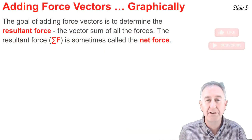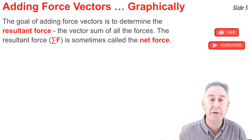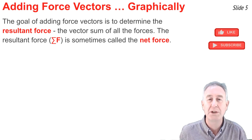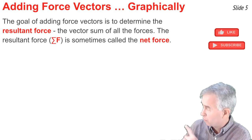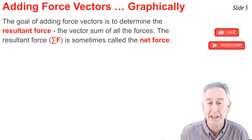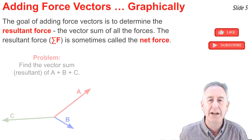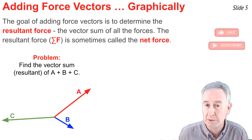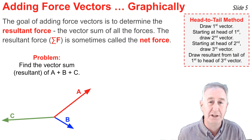Let's begin discussing the graphical method of adding force vectors together. The goal of adding force vectors is to determine the resultant force, that is, the vector sum of all the individual forces. We sometimes refer to this vector sum by a symbol called sigma f, shown here in red. And this vector sum of all the forces is often called the net force and is used to calculate the acceleration in f net equal ma problems. Here's an example in which we have three forces acting on an object and we want to know what is the resultant force.